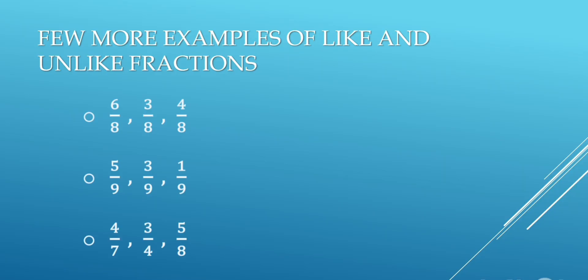A few more examples of like and unlike fractions. 6 upon 8, 3 upon 8, 4 upon 8 — in this example, denominators of all fractions are the same, so these are like fractions. 5 upon 9, 3 upon 9, 1 upon 9 — denominators of all fractions are also the same, so these are like fractions.